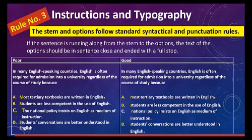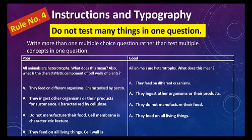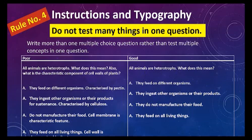Rule number four says we should not test many things in one question. If there are multiple concepts, separate them and have different questions for each concept. Look at this poorly written stem: 'All animals are heterotrophs — what does this mean? Also, what is the characteristic component of cell walls of plants?' That jumbles things together. The better version tests only one concept at a time.